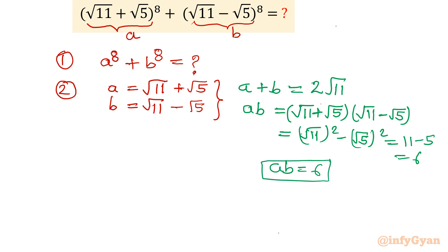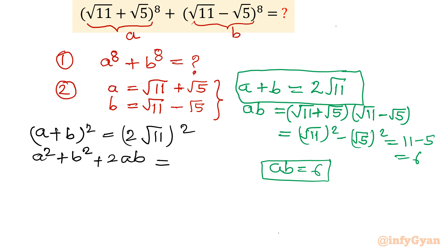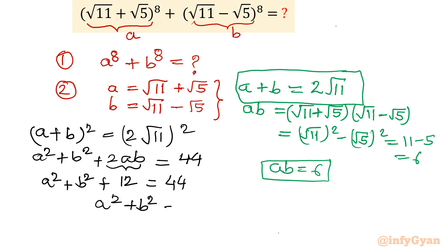Now we are targeting a⁸ + b⁸, but before that let's use a + b = 2√11. We square it: (a + b)² = a² + b² + 2ab = (2√11)² = 44. Since ab = 6, we have 2ab = 12. Therefore a² + b² = 44 − 12 = 32.